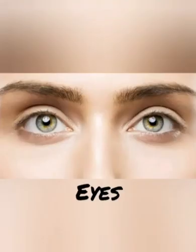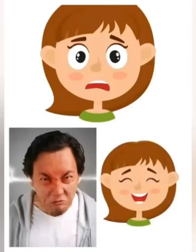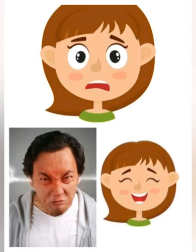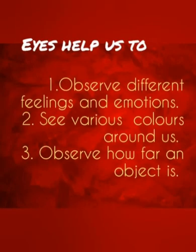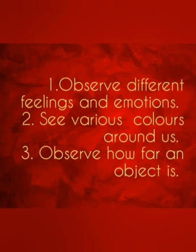Our fifth sense organ is eyes. Look at the faces — can you identify their feelings? See the expression of the first girl: she looks scared. The man looks angry. And the last girl looks happy as she is laughing. How can we identify their feelings? By seeing them with the help of our eyes. We can also differentiate colors by looking through our eyes. Eyes help us to observe different feelings and emotions, see different colors of the environment, and also check whether an object is near or far.